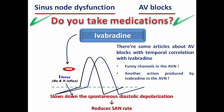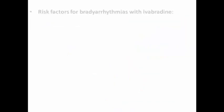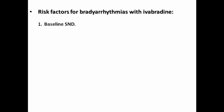Whatever the theory, there is a fact that AV blocks can be caused by ivabradine in predisposed patients. So what are the risk factors for bradyarrhythmia with ivabradine? Of course, baseline sinus node dysfunction is a strong risk factor, as ivabradine acts primarily on the SA node.